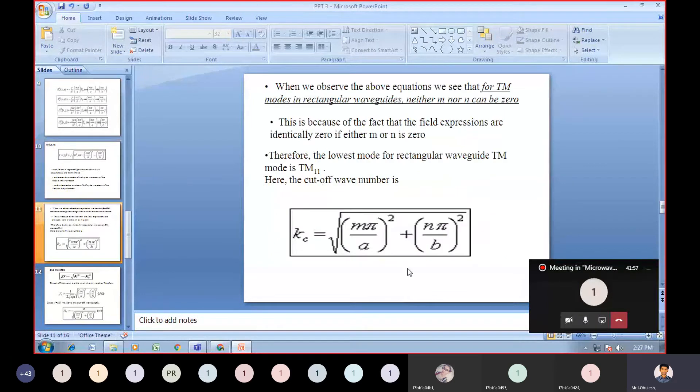When we observe the above equation, we see that for TM modes in rectangular waveguides, neither m nor n can be zero, nor can both be zero at the same time. This is because the field expressions are identically zero if either m or n is zero. Therefore, the lowest mode for rectangular waveguide TM mode is TM₁₁.